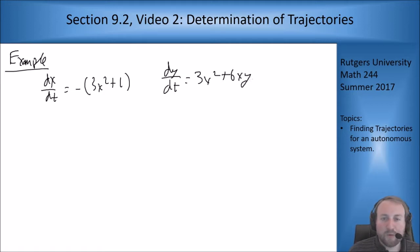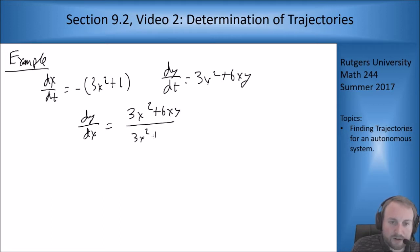Now if we write out the dy/dx by dividing the two, we'll get dy/dx equals 3x squared plus 6xy divided by 3x squared plus 1 with a negative sign in front. And now we want to try to solve this.